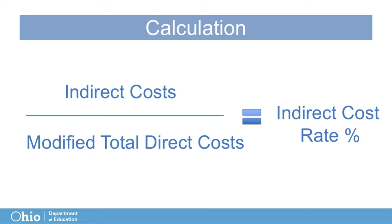The rate calculation is a simple math problem. Indirect costs are determined by dividing an organization's indirect cost by their modified total direct cost. The quotient or result becomes the Indirect Cost Rate. What are your organization's modified total direct costs versus indirect costs? The answer is a little more complex. The Indirect Cost Rate Proposal Excel Workbook is used to help districts categorize these costs.